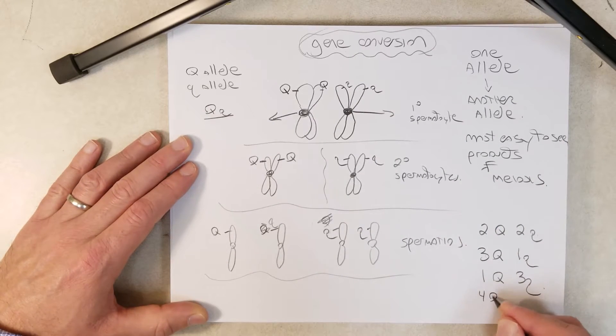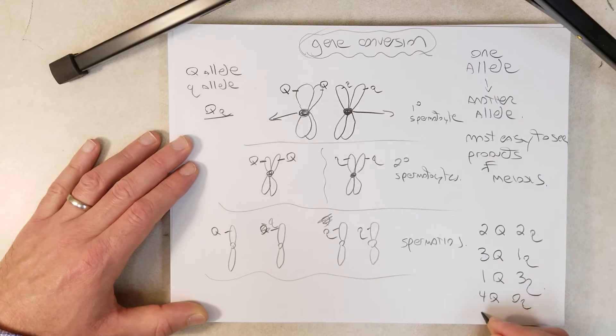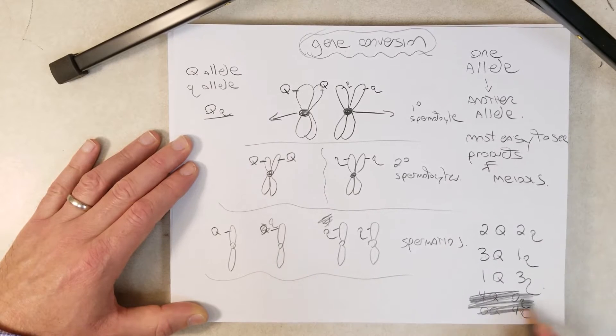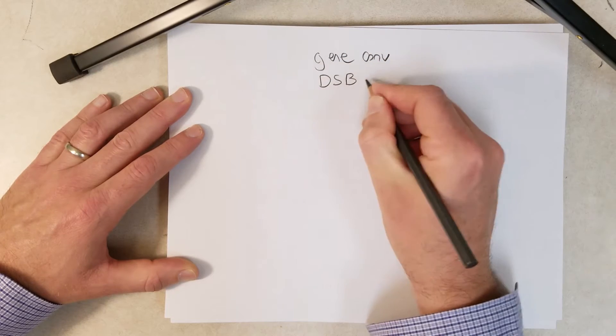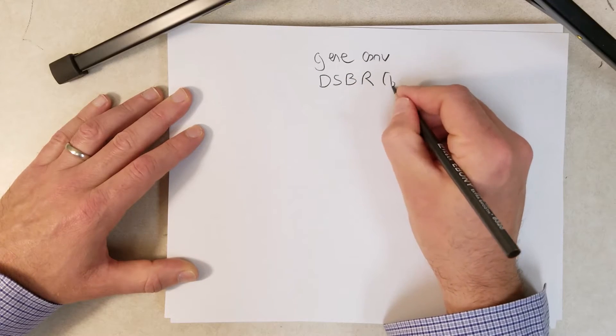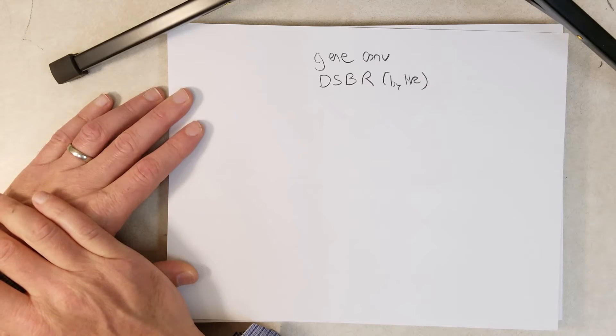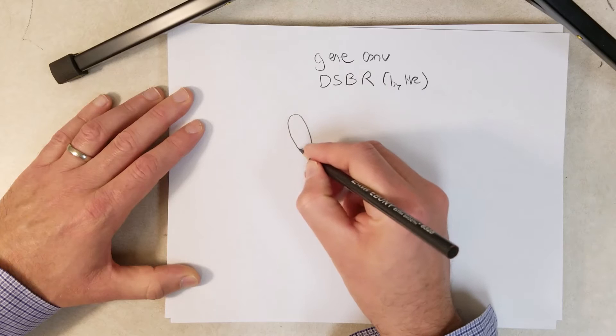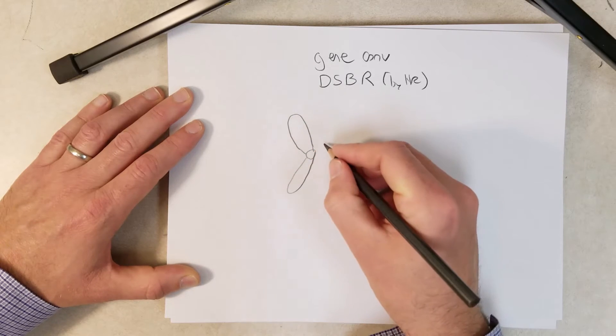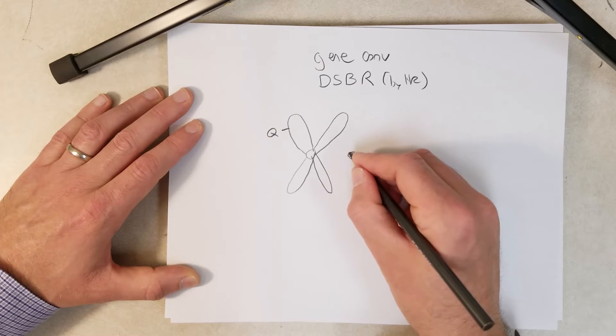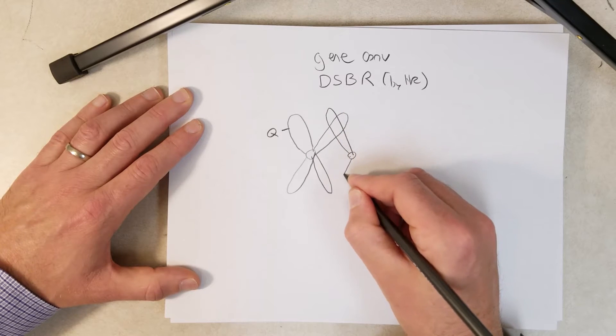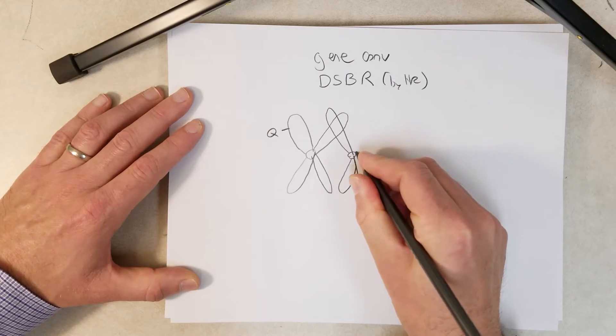We almost never see four big Q and zero little Q, or zero big Q and four little Q. So gene conversion results from one mechanism that can cause it, the double strand break repair by HR mechanism that we've covered. So in the first stage of meiosis, let's say we have a double strand break occurring in one of the homologous chromosomes.